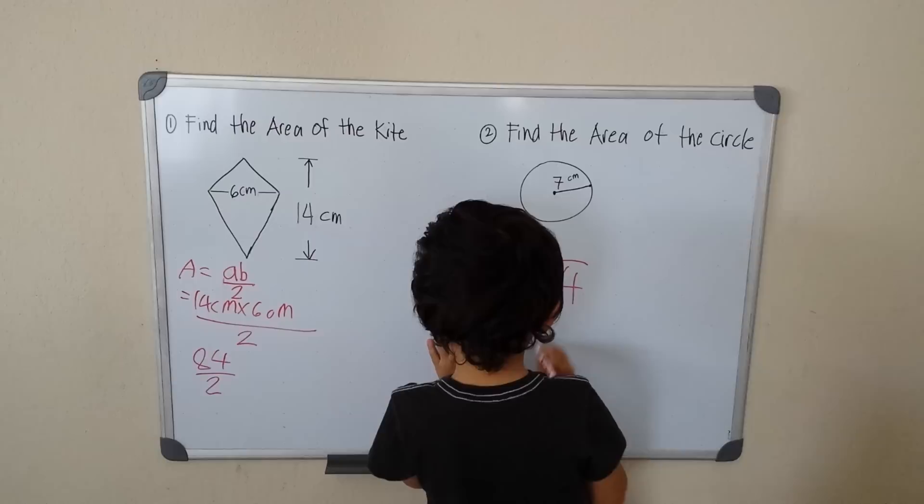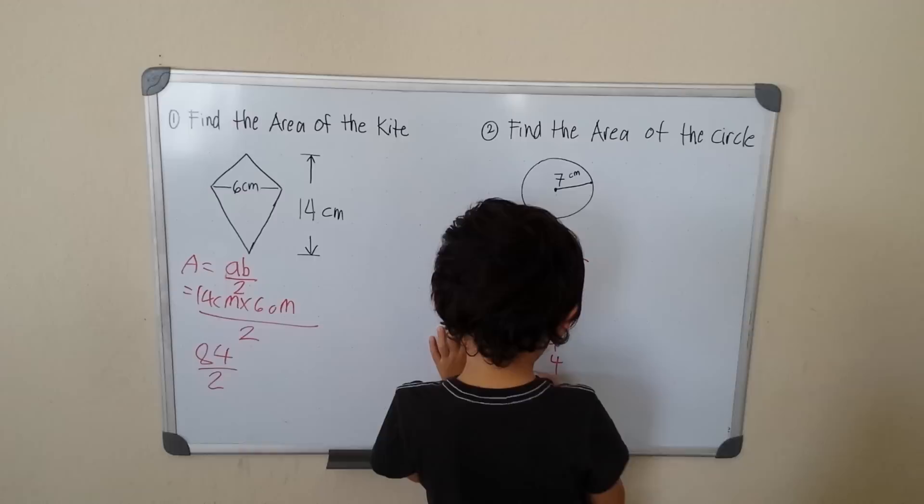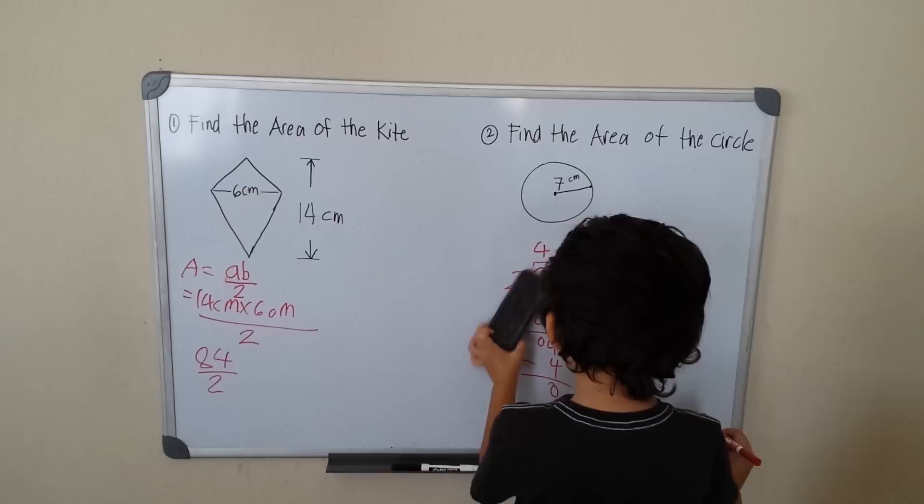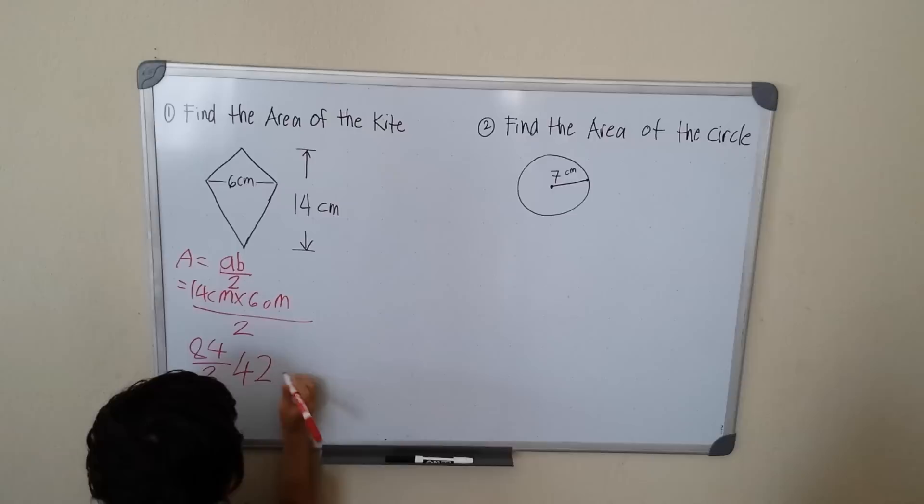Bring down to 4, how many 4 are in the 2? 4 divided by 2 is 2, 2 times 2 is 4, 4 minus 4 is 0. So my final answer is 42. So my final answer is 42, that's 84 divided by 2. So that's 42, 42 centimeters squared.